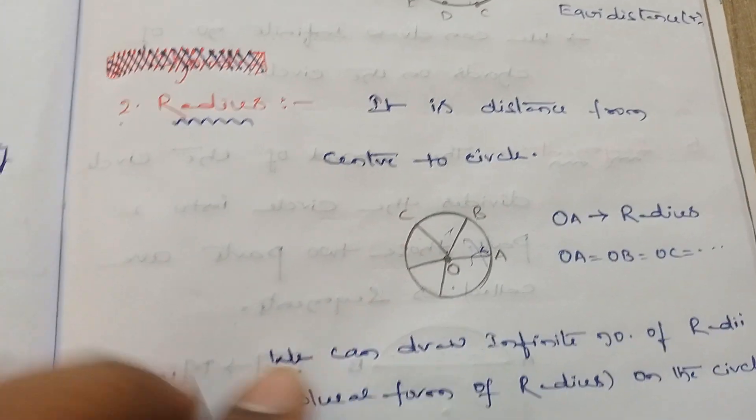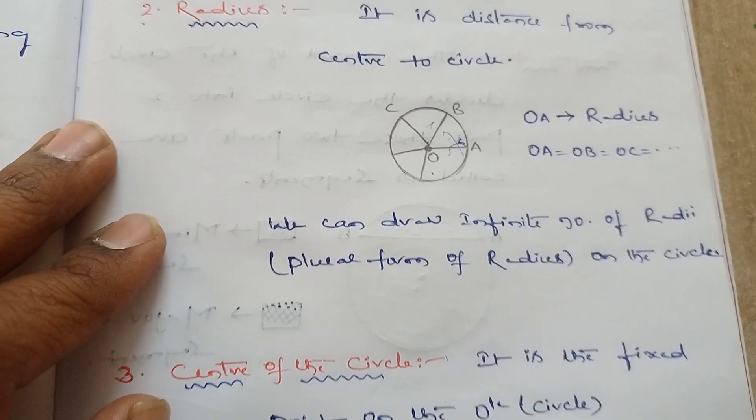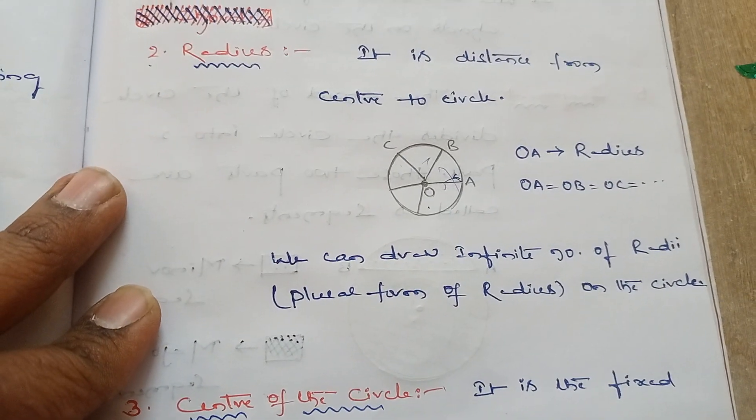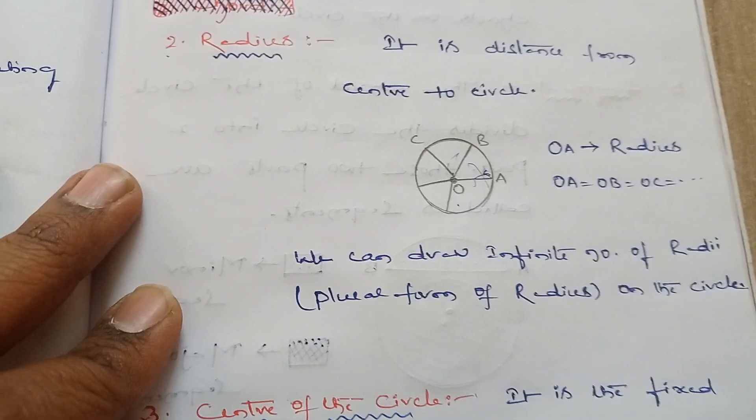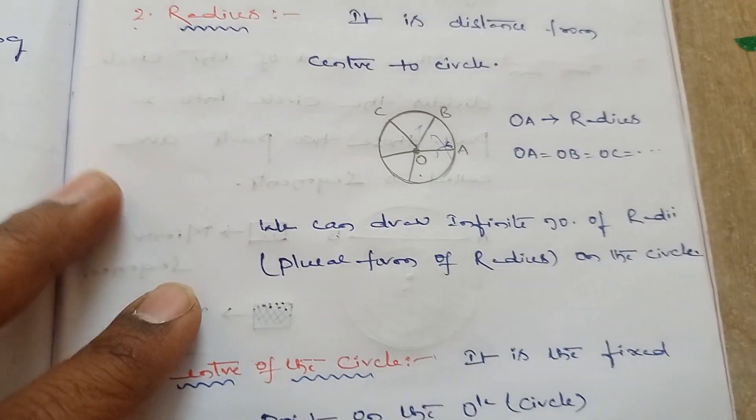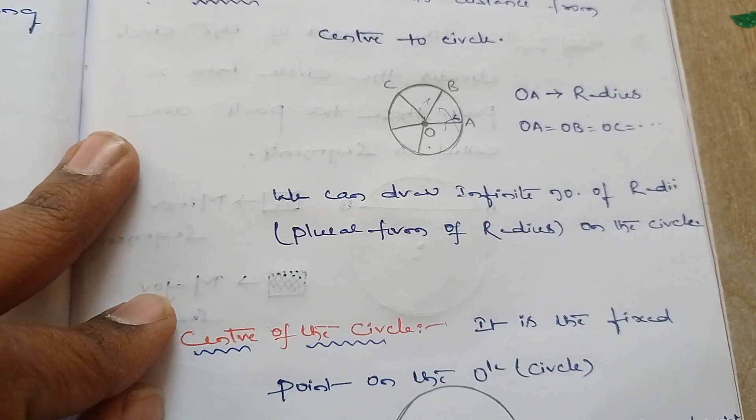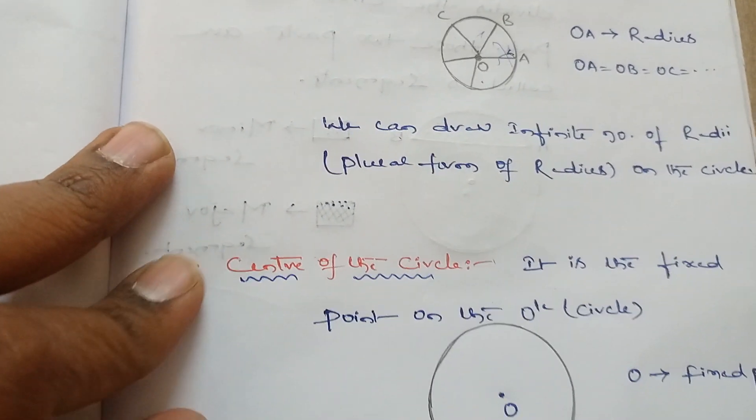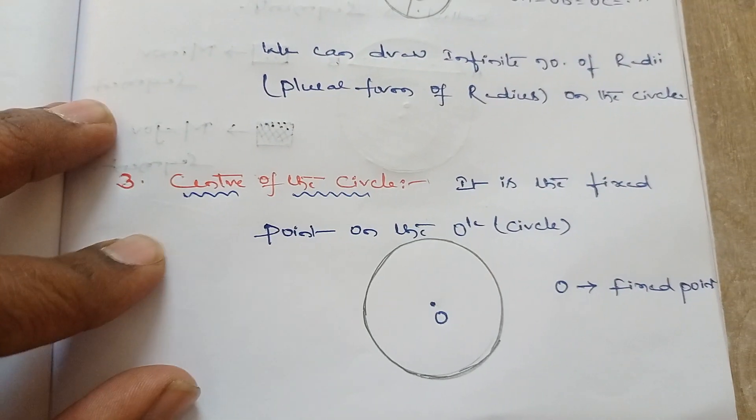We can draw an infinite number of radii. Radii is the plural form of radius. We can draw an infinite number of radii on the circle. Coming to the center of the circle...